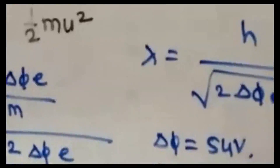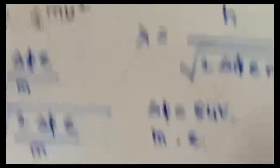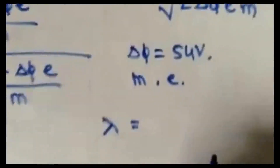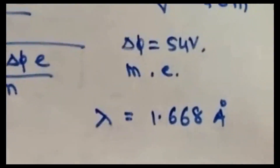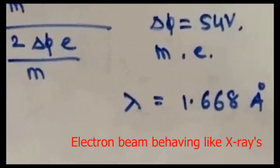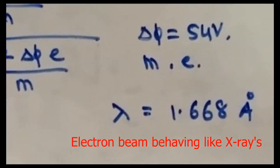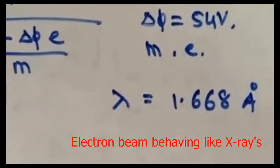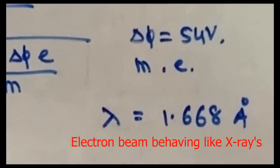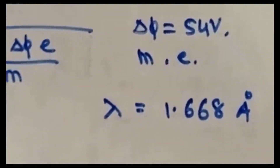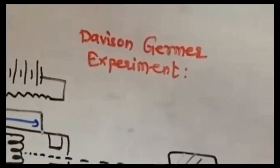Substituting the mass of the electron and charge of the electron into the formula, the wavelength of the incident electron beam was found to be 1.668 Ångström units, which is just like X-rays. So when accelerated through a potential of 54 volts, the electron beam behaves like X-rays. That was the Davison-Germer experiment.